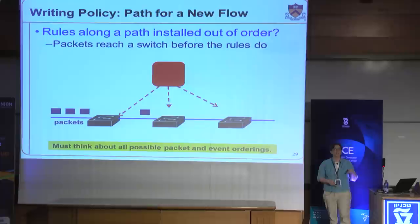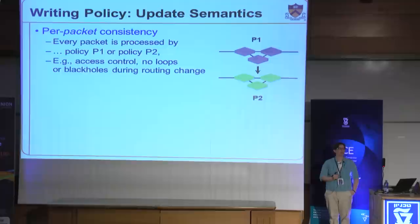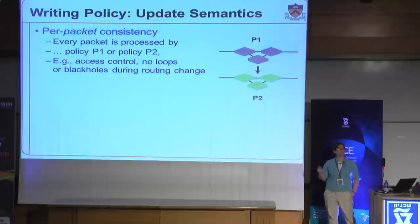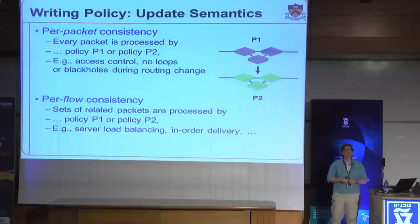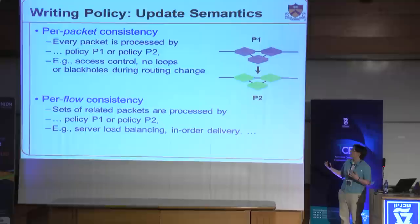Rather than have the programmer think about all this, we provide a simple abstraction that says: I want to transition my entire network from policy P1 to policy P2. We define two notions of consistent policy update. Per-packet consistency implies that any individual packet in the network at the time of the update is either processed entirely by policy P1 or entirely by policy P2 — never some weird mixture of the two, never one switch still applying P1 while the rest apply P2. This is very useful for applications like access control reconfiguration, avoiding loops and black holes. Per-flow consistency means all packets of a single flow, like all packets of a TCP connection, go to the same replica of a web server even if a change in load balancing policy is happening.